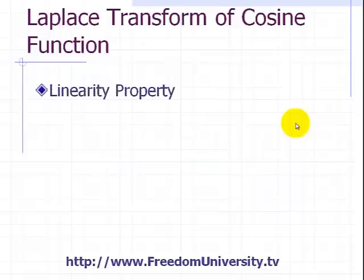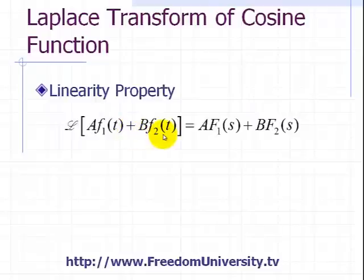Again, to find the Laplace transform of a cosine function, you need two things. One is the linearity. It says that you have a linear combination of inputs F1 and F2 scaled by constants A and B, and the Laplace transform of this linear combination of inputs is the corresponding combination of its Fourier transforms for each of the functions F1 and F2. So here we have A F1 of s plus B times F2 of s.